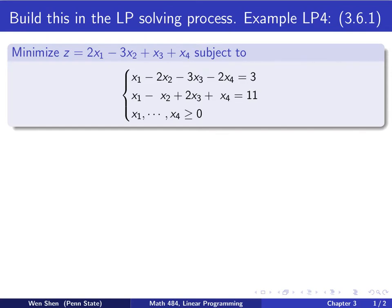Hello everyone, welcome to video 22 of chapter 3. In this video, we will look into how to build the artificial variable process we did last time to get a canonical form into the linear programming solving process. We take an example and learn the procedure through this example. We call this LP4, example 3.6.1 in the textbook.